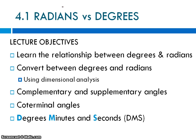We're going to learn the relationship between degrees and radians, how to convert between degrees and radians using dimensional analysis, and then go through similar aspects like complementary, supplementary, and coterminal that we did in degrees already. And then we're going to learn about DMS — degrees, minutes, and seconds — which is just a way to fine tune the measuring of an angle.